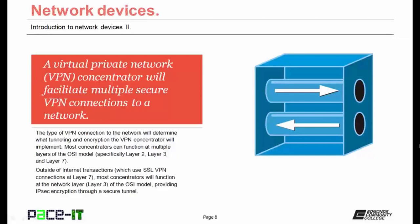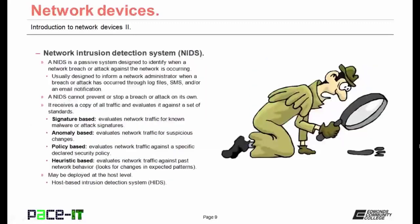Let's discuss network intrusion detection systems, or NIDS. A NIDS is a passive system designed to identify when a network breach or an attack against the network is occurring. They're usually designed to inform a network administrator when a breach or attack has occurred through log files, text messages, voicemails, and/or email notification. A NIDS cannot prevent or stop a breach or an attack on its own, as it's only passive in nature. It receives a copy of all traffic and evaluates it against a set of standards.